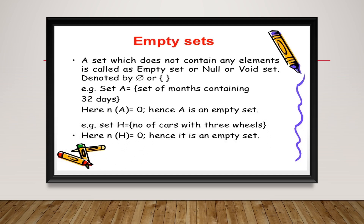A set which does not contain any elements is called an empty set, or a null or void set. We denote it by a circle with a diagonal slash, or open and close brackets with no elements inside. For example, set A equals the set of months containing 32 days — since no month has 32 days, that is an empty set.